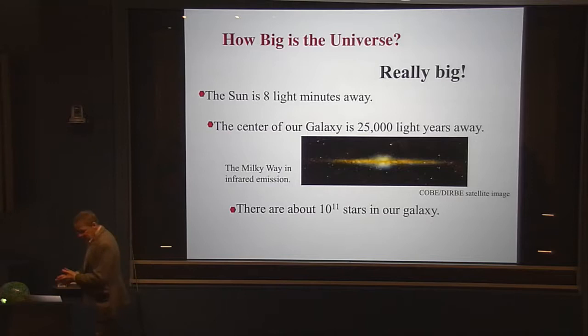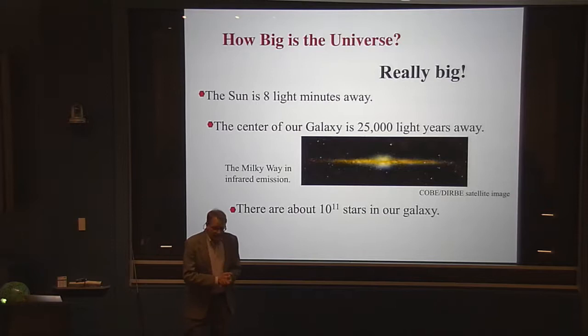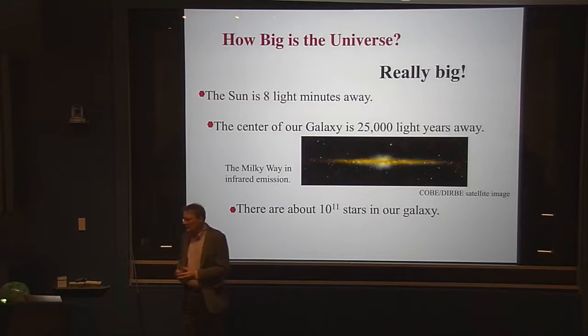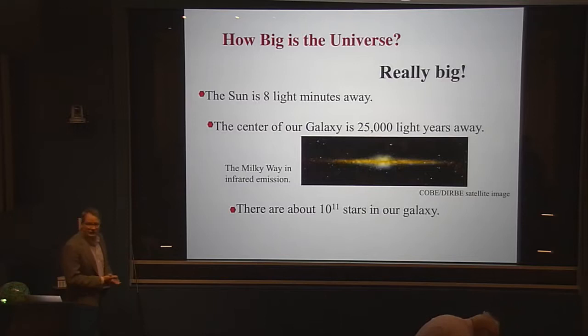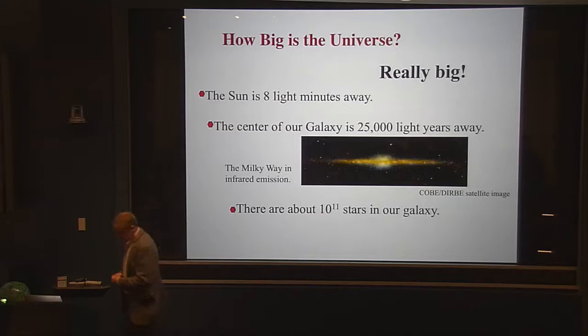One of the hard things about thinking about the universe is getting your head around how big it is — and it is really big, it's the whole universe. The moon is about 240,000 miles away, so it's about a light second away. If you have a good car, you can drive to the moon, and if you have a Volvo, you can drive back. The sun is eight light minutes away, so when something happens on it, we don't see it for eight minutes. Even the effects of gravity propagate at the speed of light — if it disappeared, we wouldn't know it for eight minutes.